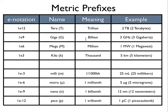Tera means trillion, giga billion, mega million, kilo thousand. These are for smaller numbers. Milli is one one thousandth, one one millionth, one billionth, and one trillionth.